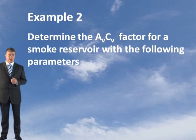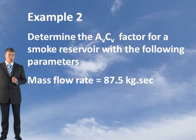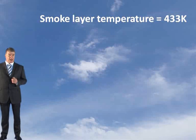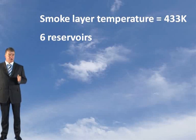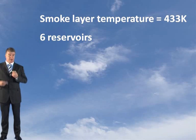Let's do another example using this method. Determine the AVCV factor for a smoke reservoir with the following parameters. Your mass flow rate of smoke is 87.5 kilograms per second. Your density of air is 1.177 kilograms per meter cubed. Your temperature of the smoke layer is 433 degrees Kelvin. Now there are six reservoirs available, so when you come to your AVCV factor, you should put in 1 divided by 5. As long as they're all available and going to open, you've got one for your outlet and five inlets.